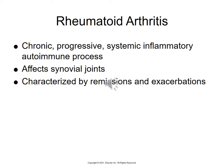Rheumatoid arthritis is a chronic, progressive, systemic inflammatory autoimmune process. It affects the synovial joints and is characterized by remissions and exacerbations. The exemplar begins on page 1017; key features are on page 1018. Early disease signs include joint inflammation, low-grade fever, fatigue, weakness, anorexia, and paresthesia — that pins-and-needles feeling.